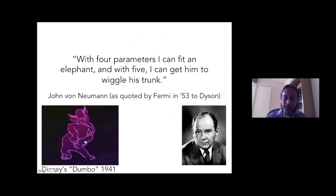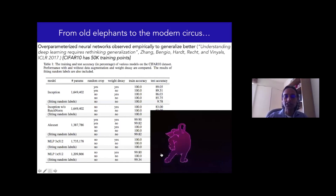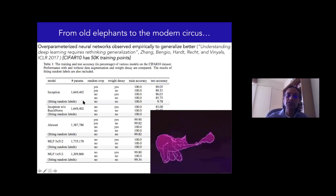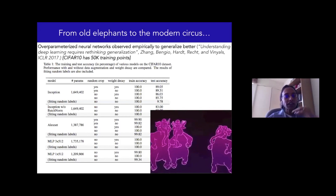From that perspective, we find ourselves in the modern world with literally a circus of really large models. There was this very important paper analyzing CIFAR-10, which has 50,000 training points and 60,000 points total. They looked at modern networks and saw they were able to interpolate everything — they had so much approximation ability that they could actually fit random labels, and yet when trained normally they would still have good test accuracy. The question was: what is going on in these interpolative models?